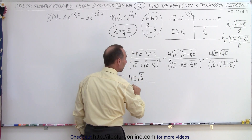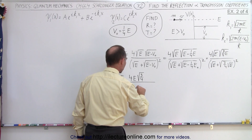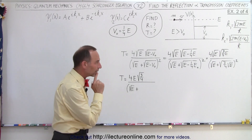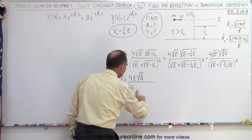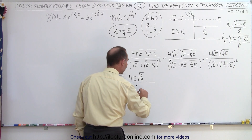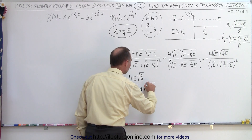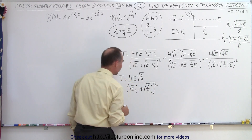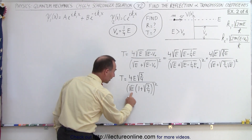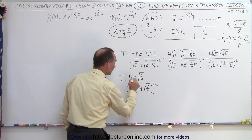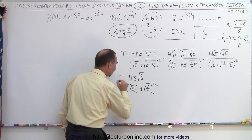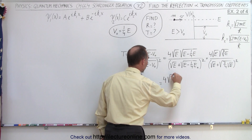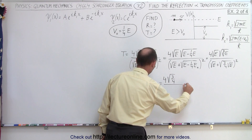Divided by — if we factor out the square root of E, that might be even better. So the square root of E times 1 plus the square root of 3/4, and that's the whole thing squared. Now here we can see that we have the square root of E squared, and in the numerator we have E, so this will cancel out. And so then we're left with 4 times the square root of 3/4, divided by...